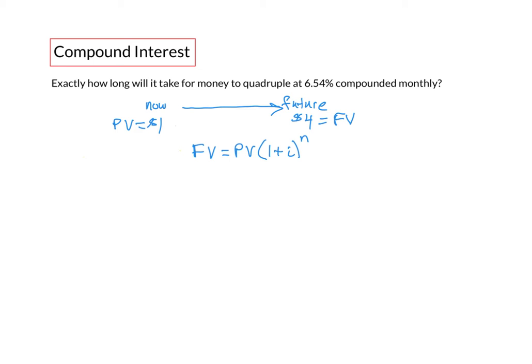We have values for present value and for future value so let's work out i and n. We're given the nominal interest rate so i would be the nominal interest rate which we'll write as a decimal 0.0654 divided by the compounding frequency so it's monthly so divide by 12.